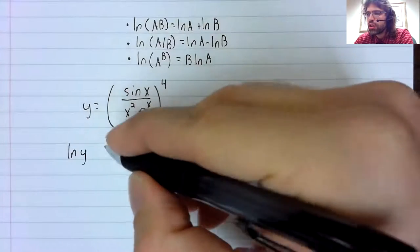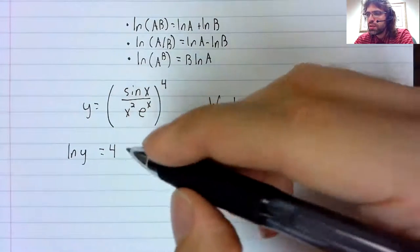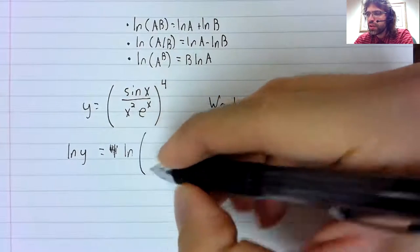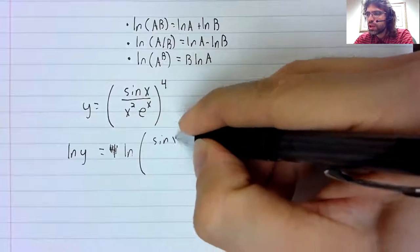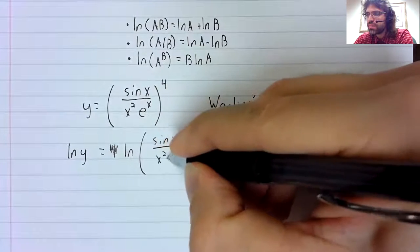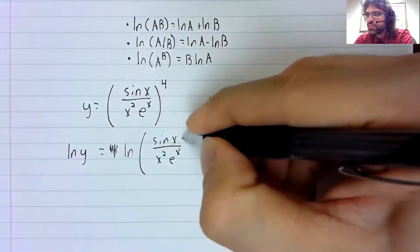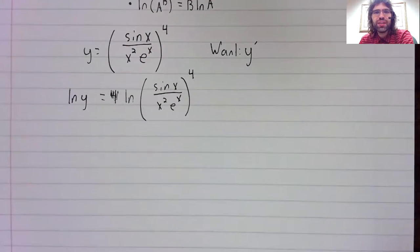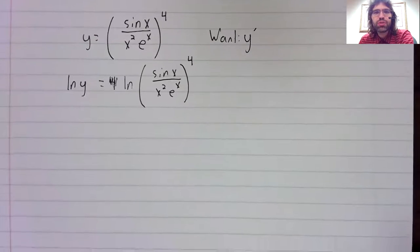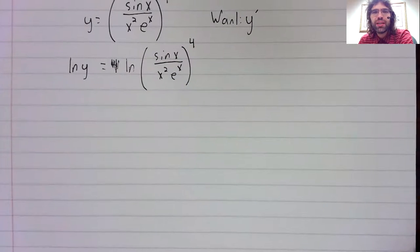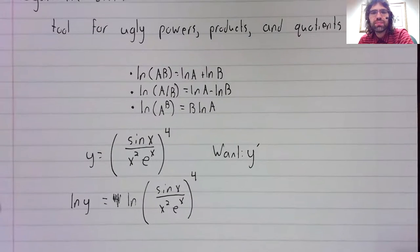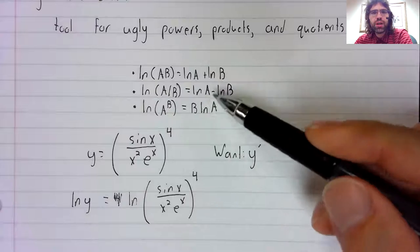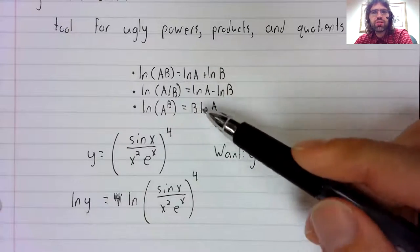What if we took the logarithm of both sides of this equation? Your first instinct might be that you've taken a bad problem and made it worse, but we can simplify this logarithm using these properties.